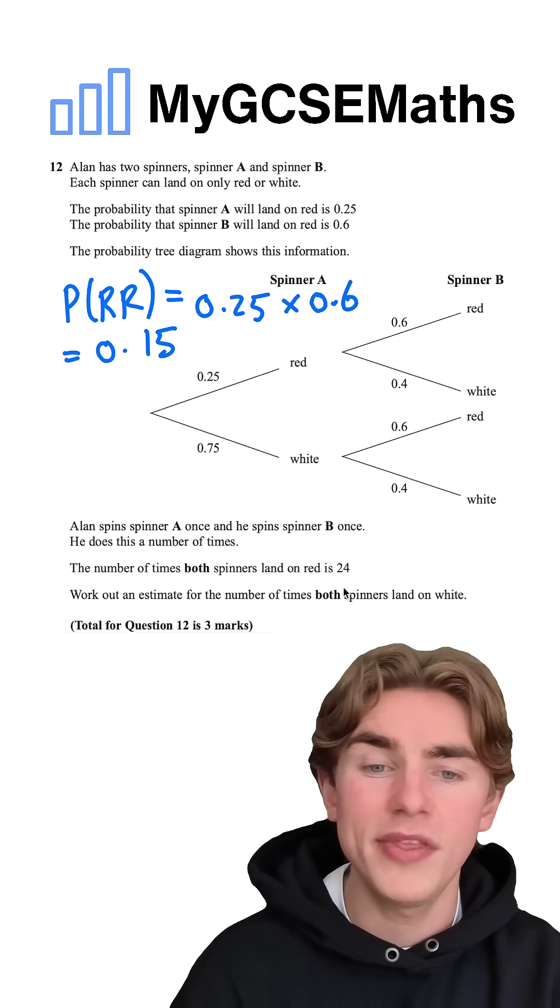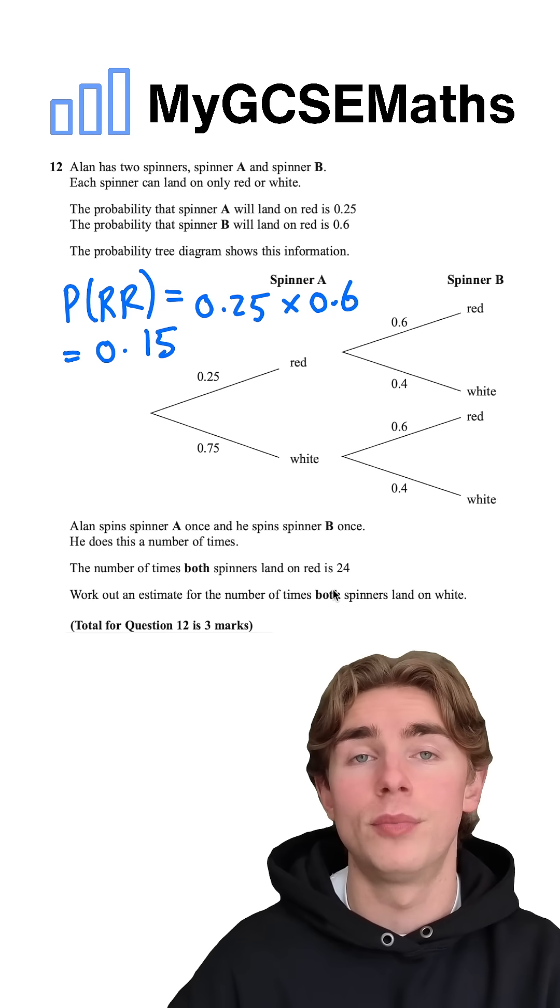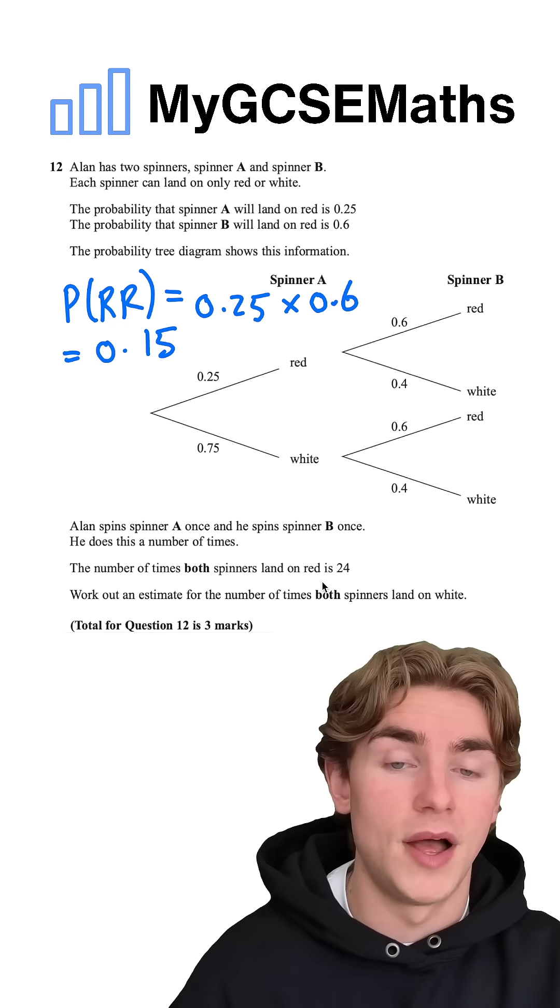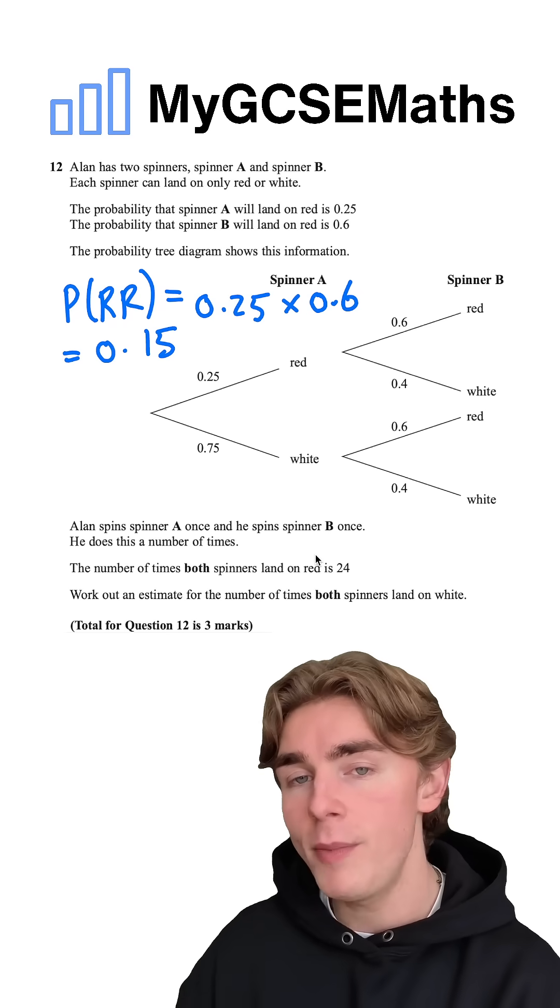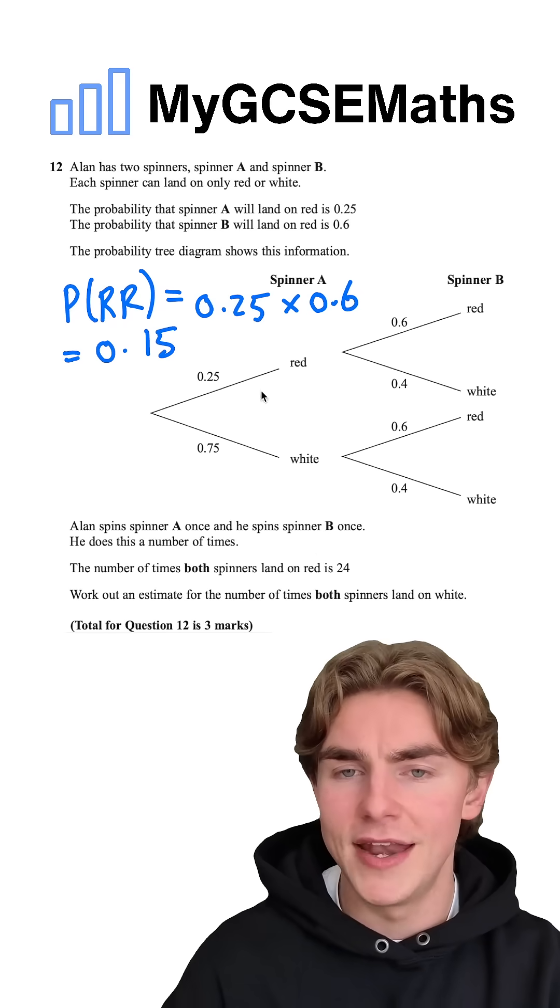Now, how does that help us? We know that it lands on red 24 times, and the probability of landing on red is 0.15. From relative frequency, to find an estimate for the number of times that something happens, we can do the probability of that thing happening times the total number of things which happen.